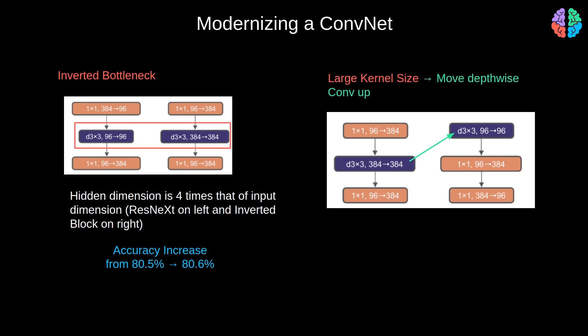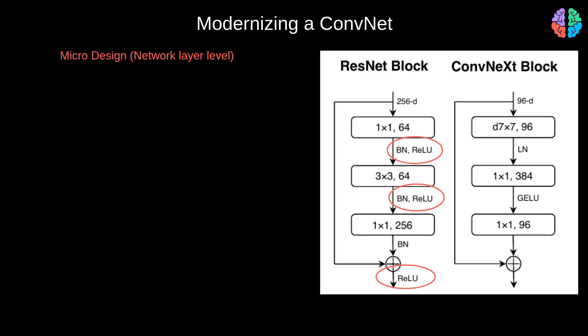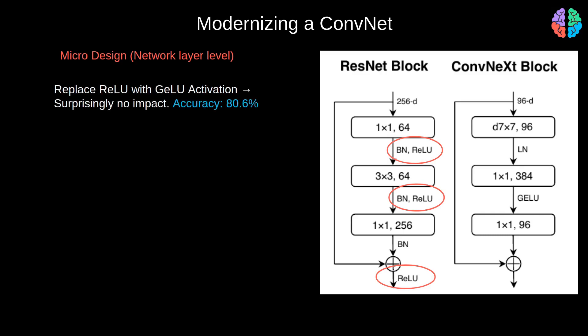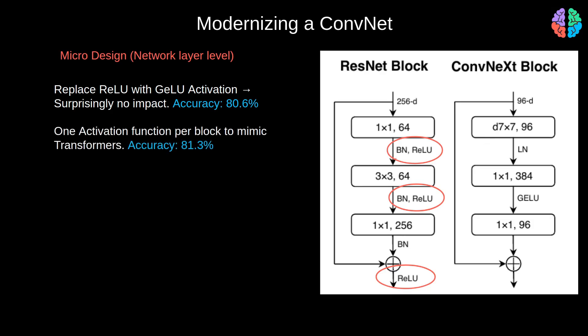Moving on to micro design, which investigates changes at the individual layer level. Whereas ReLU is most successful in vision tasks, GELU (Gaussian Error Linear Unit) has been quite successful in language tasks, used in architectures like GPT and BERT. Replacing ReLU with GELU, accuracy surprisingly remains the same. To mimic transformer activation functions, the authors cut down the number of BatchNorm and ReLU activations, keeping just one GELU activation in the entire block, shooting accuracy up to 81.3 from 80.6.